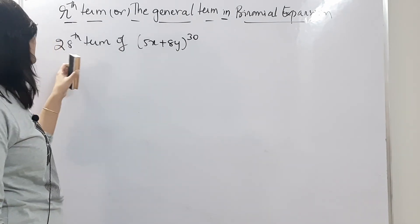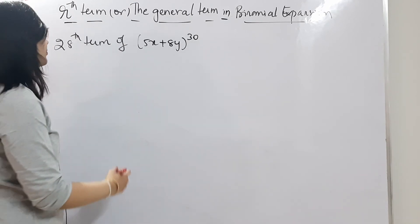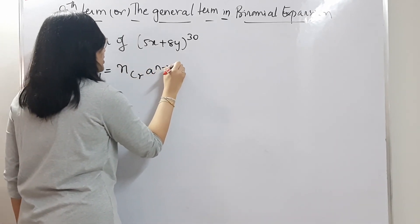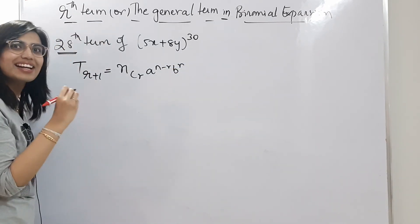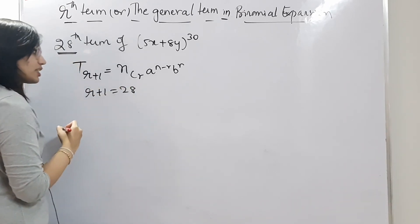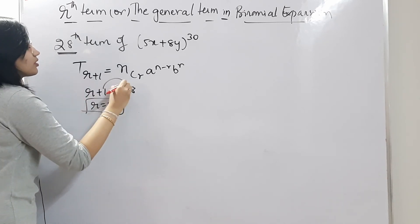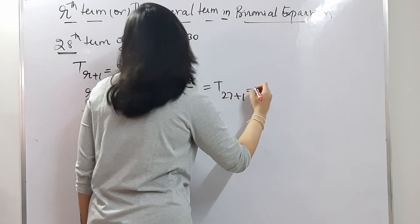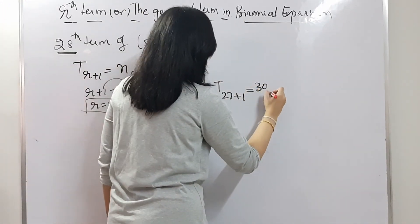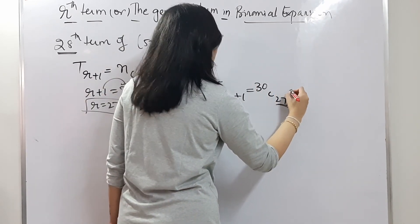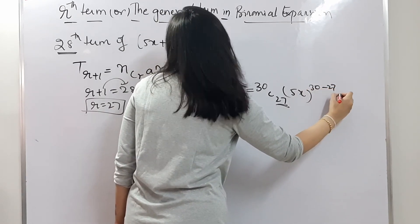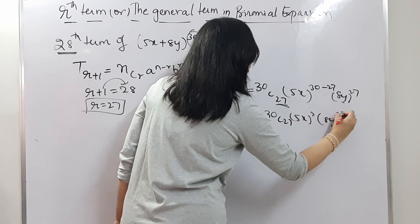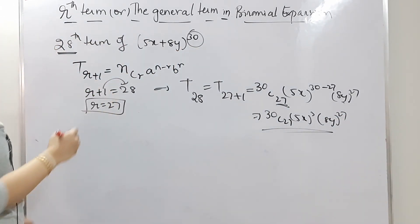Example: Find the 28th term of (5x + 8y)^30. The general term formula is T_{r+1} = nCr · a^(n-r) · b^r. For the 28th term, r+1 = 28, so r = 27. Therefore T_{28} = T_{27+1} = 30C27 · (5x)^(30-27) · (8y)^27 = 30C27 · (5x)^3 · (8y)^27. This is the 28th term of the expansion.